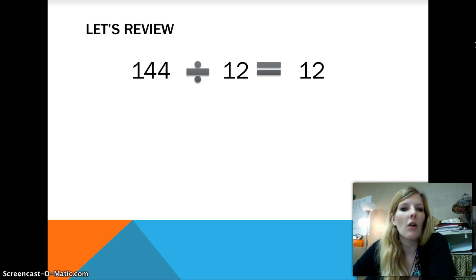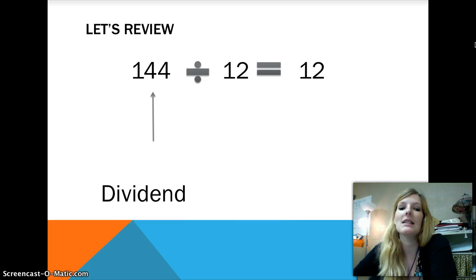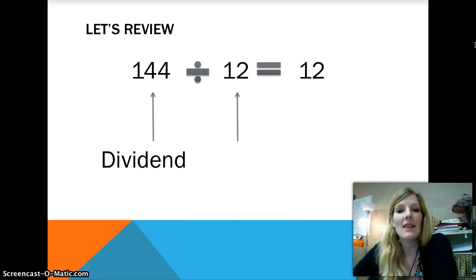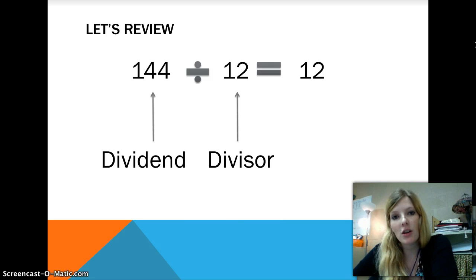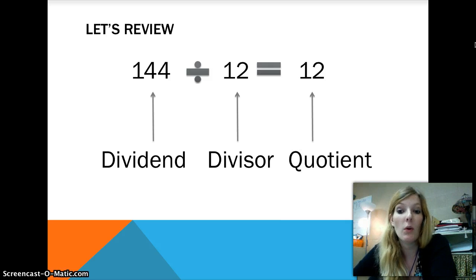Okay, so I'm going to show you two different ways to set up a division problem and the names of those correct places. This one is called the number we start with. This is the number we're dividing. This is the dividend. Then the number that we're dividing it by is called the divisor. And then of course the answer to a division problem is always called the quotient.